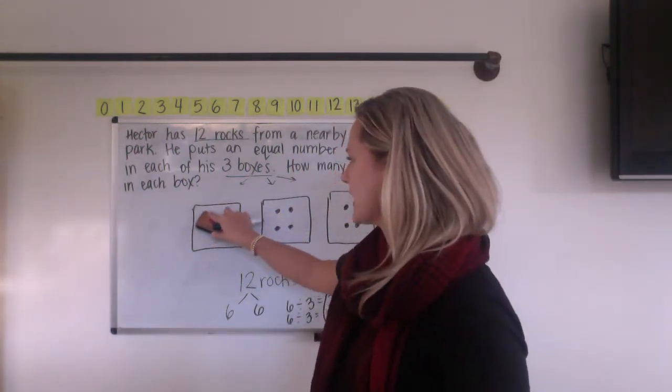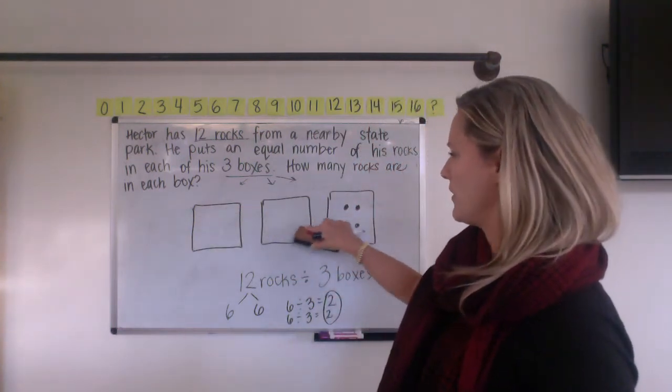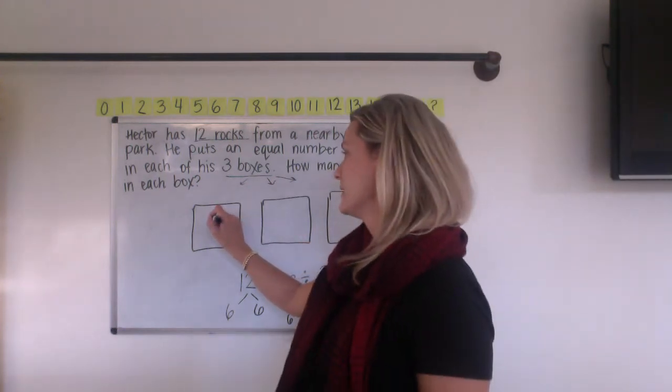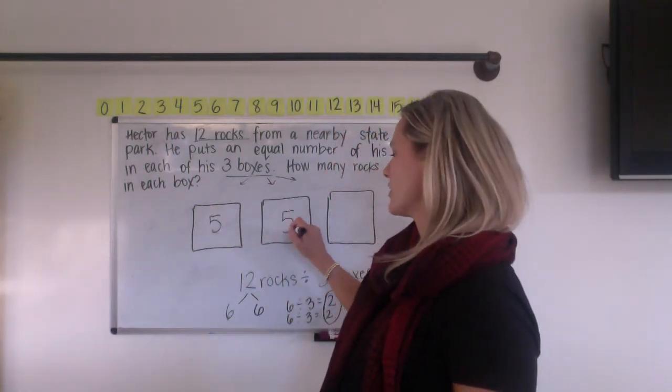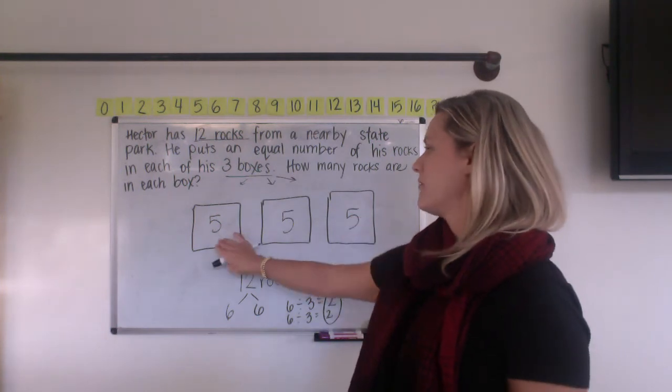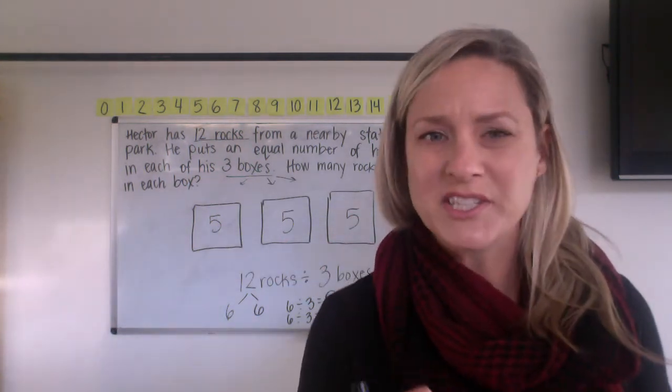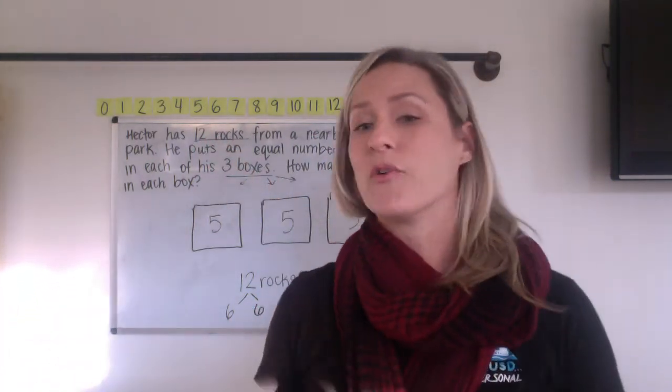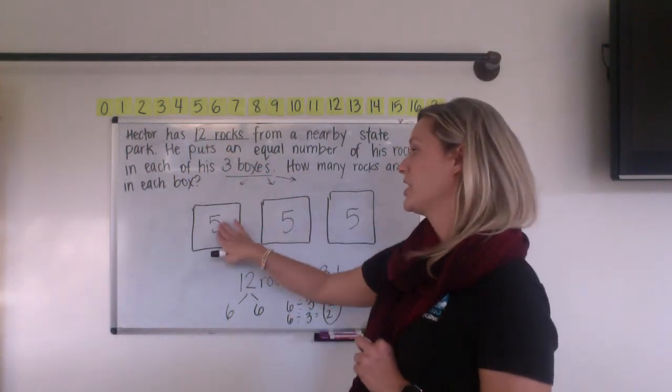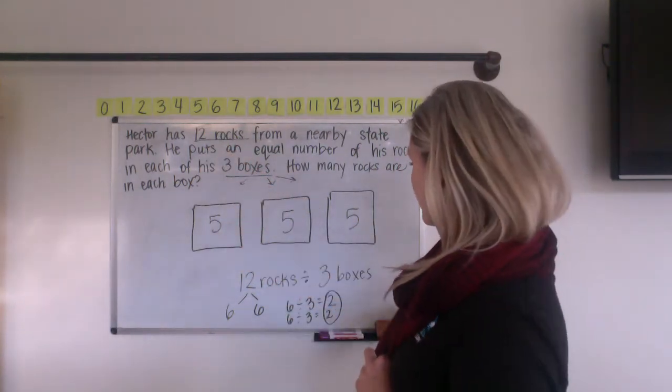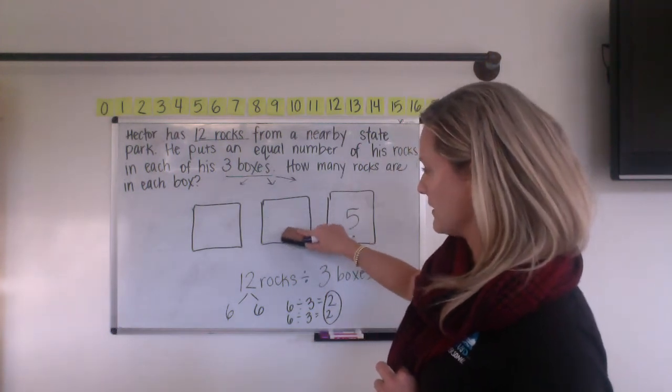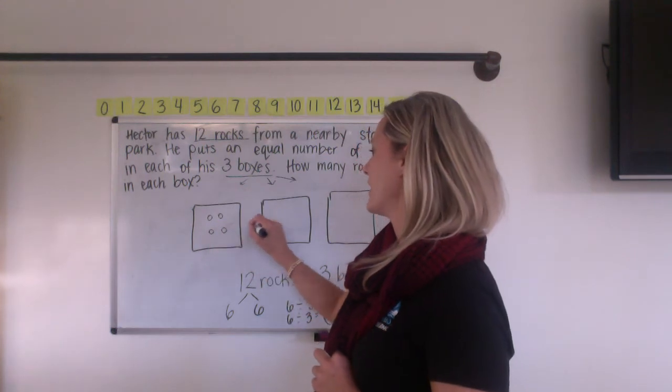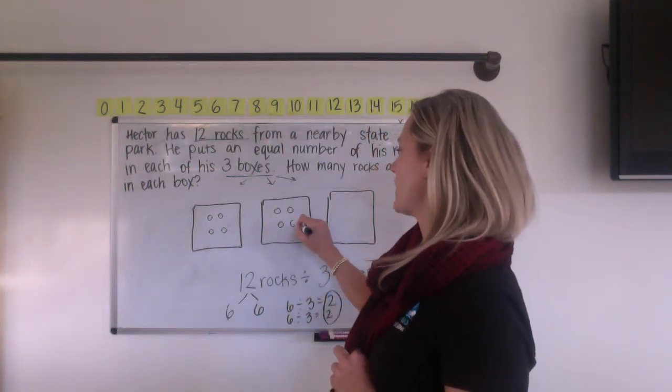All right. So let's go back here for a second where we don't know how many rocks are in each box. We can also try putting five in, right? So maybe I'll just write the number five instead of drawing five circles. Five, 10, 15. Now that would be too many because we only had 12 rocks to use up, right? So 15 would be too much. So we know it can't be five. So we knew it was going to be more than two but less than five. So we ended up with four rocks per box.